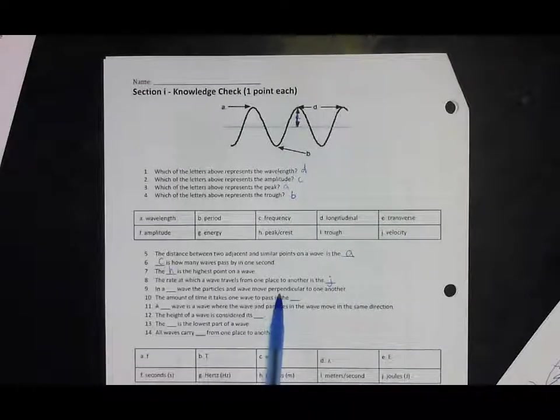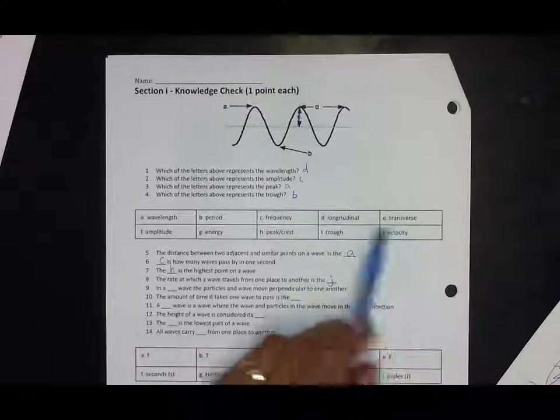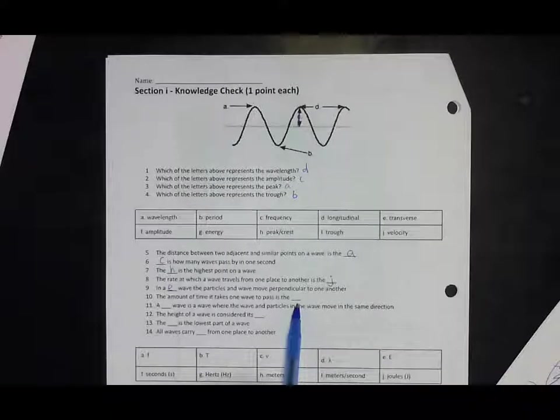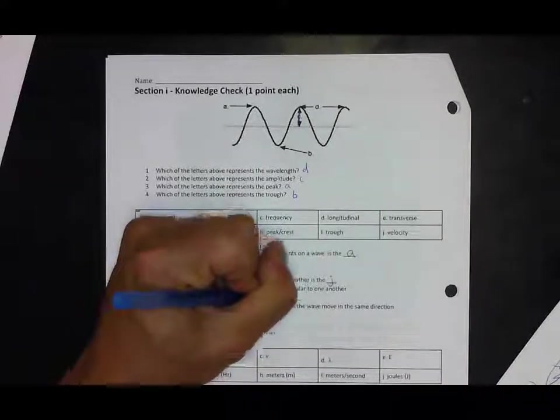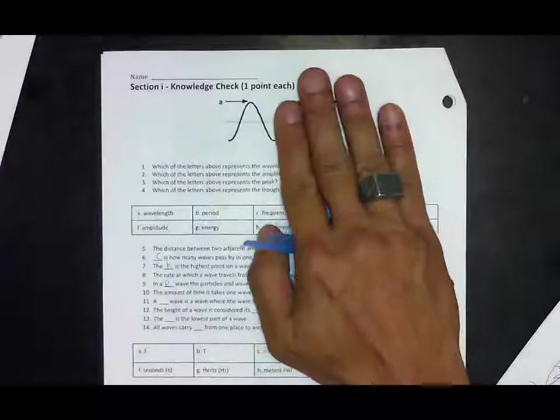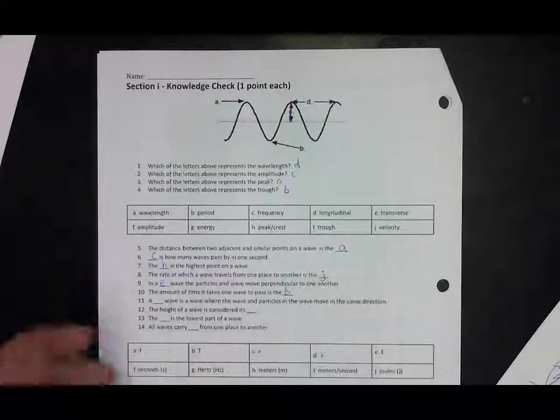In a blank wave, the particles on the wave move perpendicular to one another. When we talk about perpendicular motion relative to the wave and the particles in the wave, we're talking about transverse. The amount of time it takes one wave to pass is the period. That's the time for just one wave, not its length, but the time for that one wave to pass.